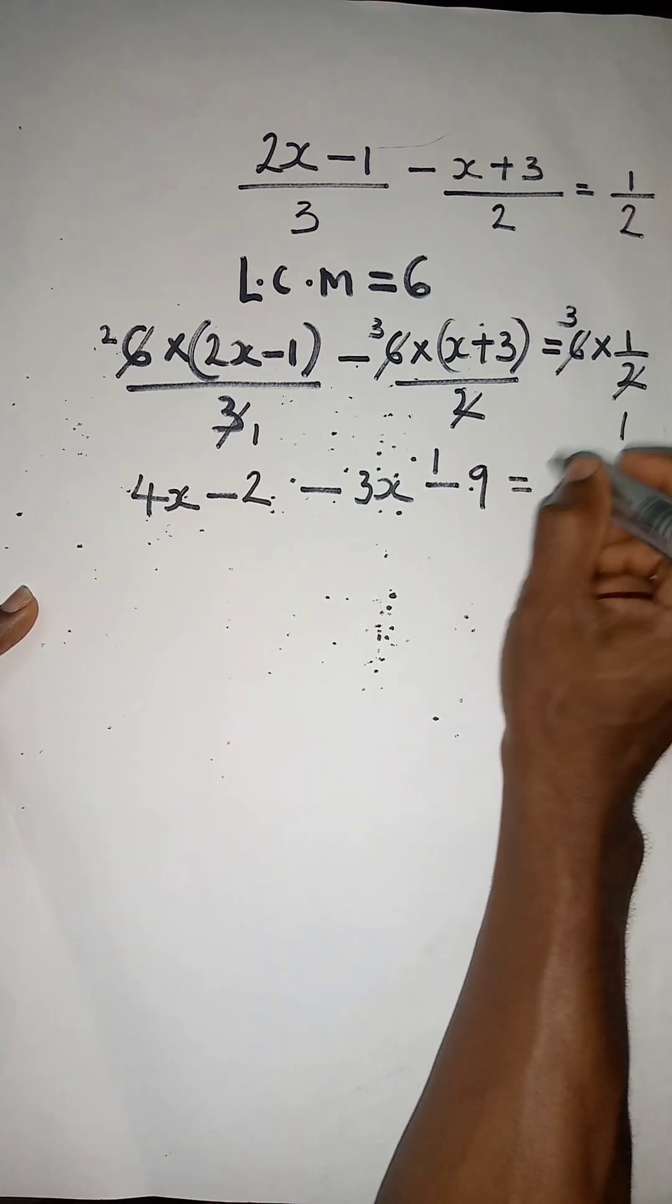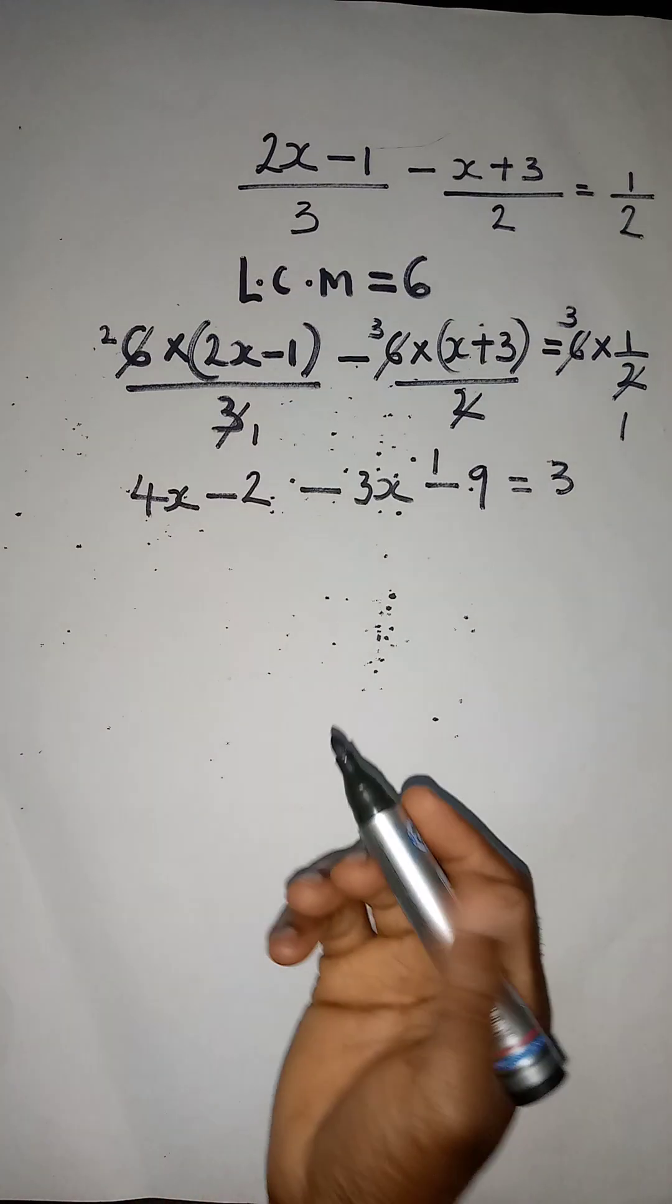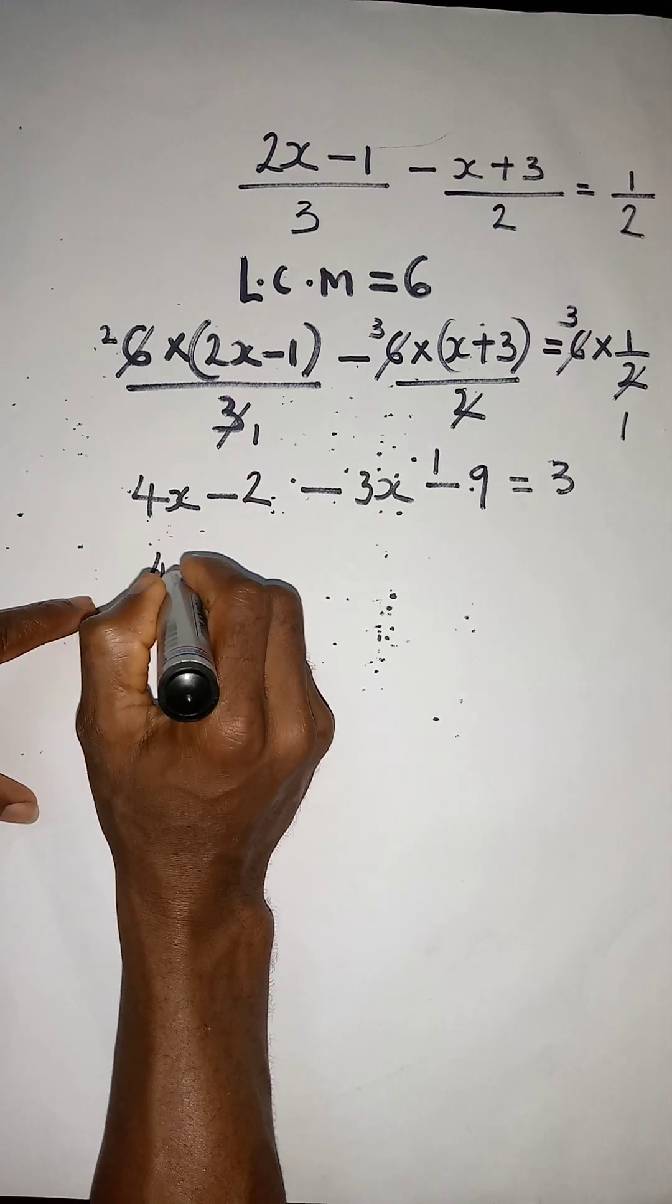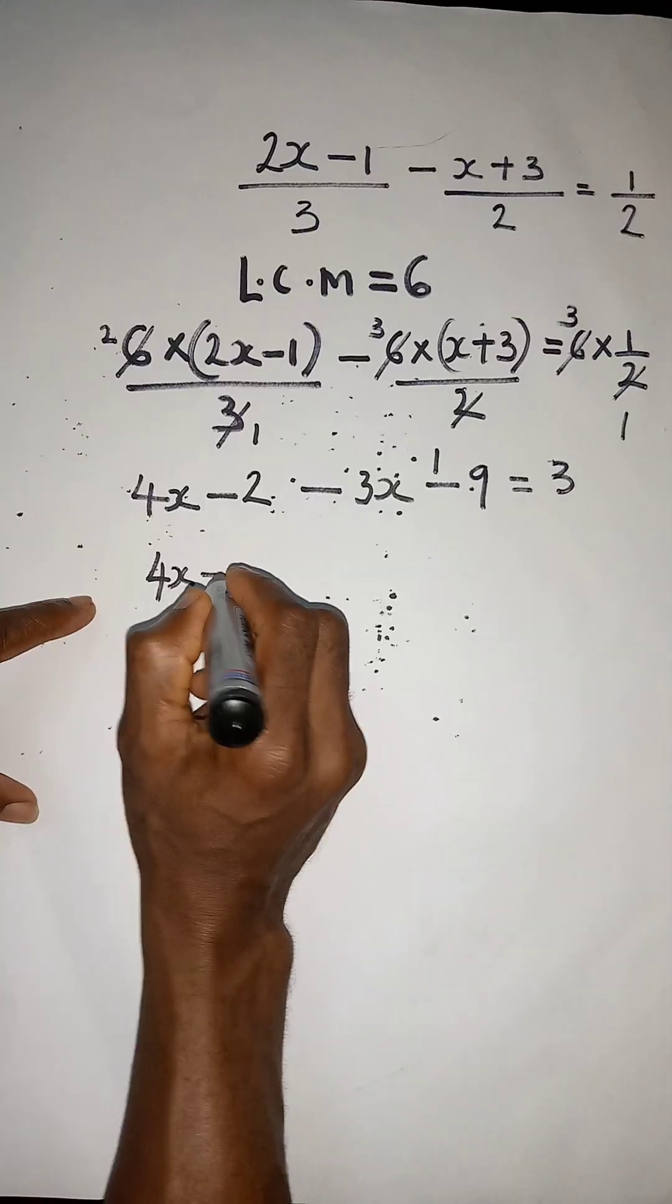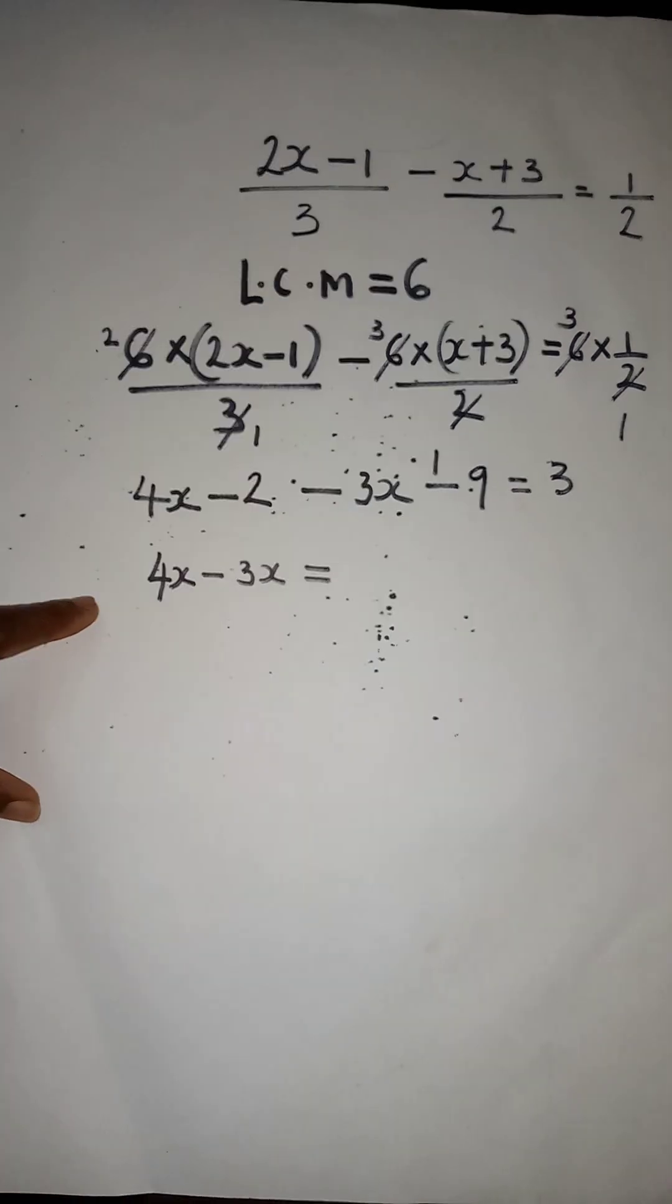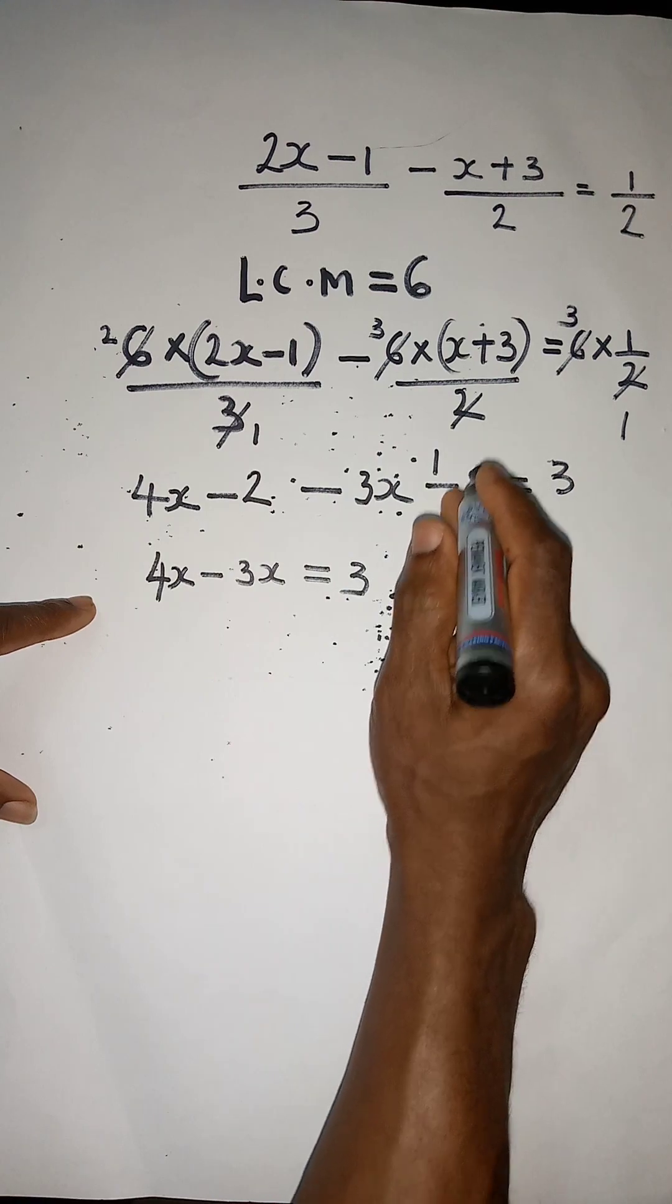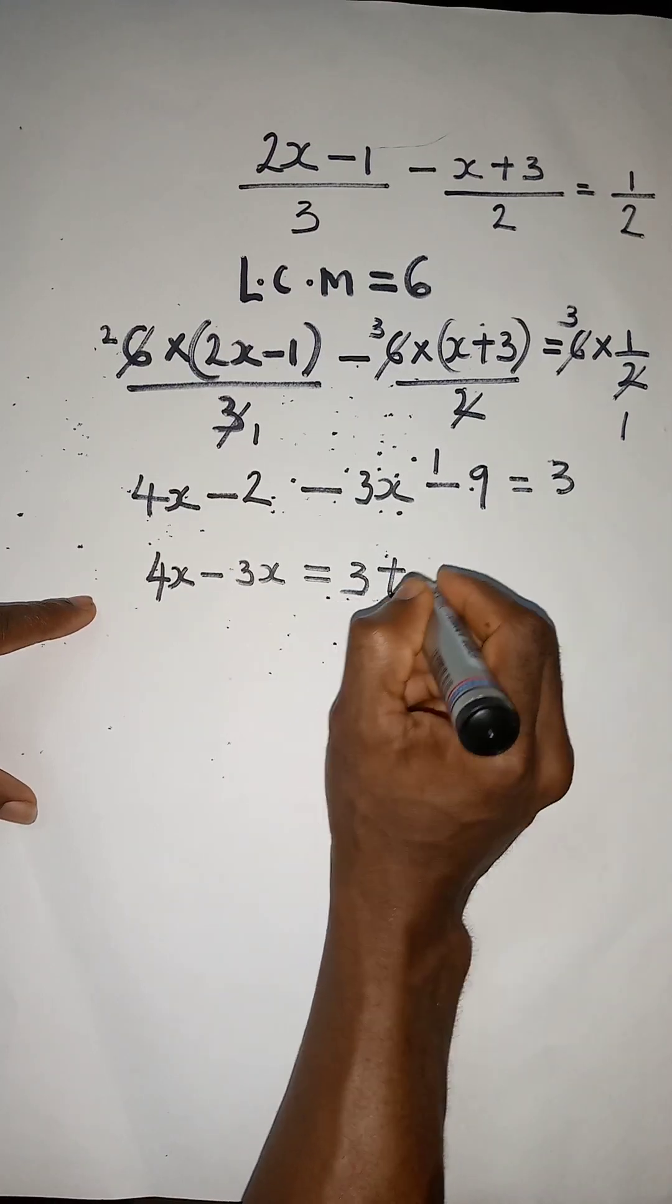Equal to 3. Here we have a linear equation, so let's take like terms. Here we have 4x, here we have 4x minus 3x equal to 3. When minus 9 crosses it becomes plus 9, and when minus 2 crosses it becomes plus 2.